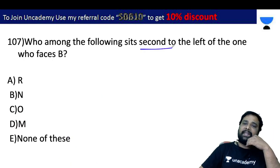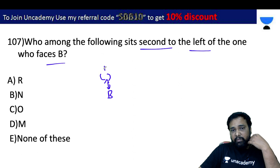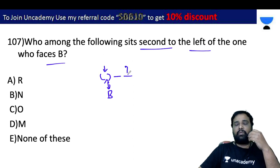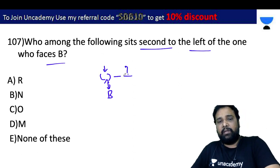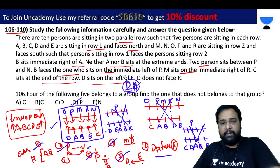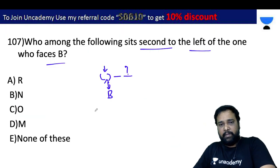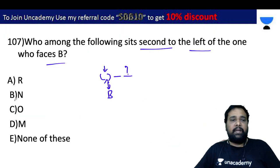Who among the following is second to the left of the one who faces B? Identifying who faces B, then taking the second left of that person. The answer is S.